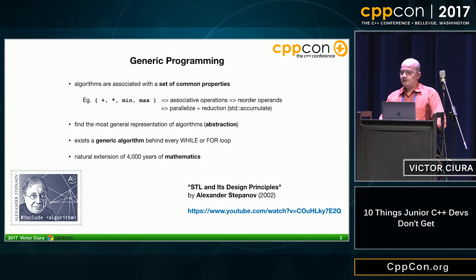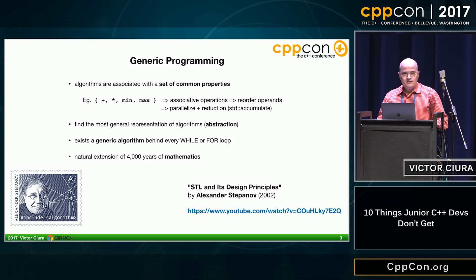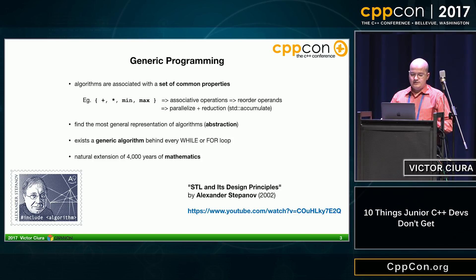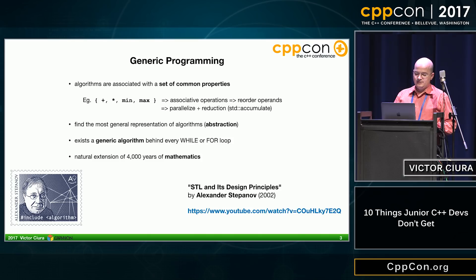Another thing junior developers don't get is generic programming. They think it's all about templates — it's not just about templates. It's about algorithms and how they're associated with a set of common properties, and finding the most general representation of algorithms and abstractions. The fact that there is a generic algorithm behind every while and for loop, and that finding the generic setting of an algorithm is the natural extension of 4,000 years of mathematics. I encourage you to watch an older talk by Alexander Stepanov on STL and its design principles.